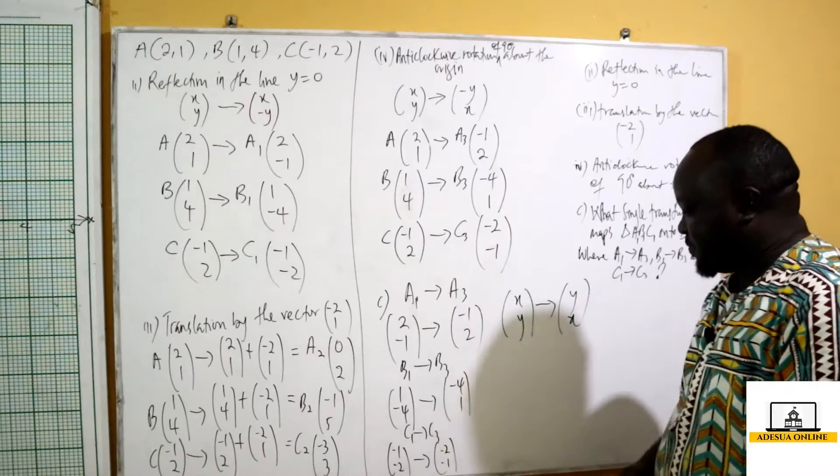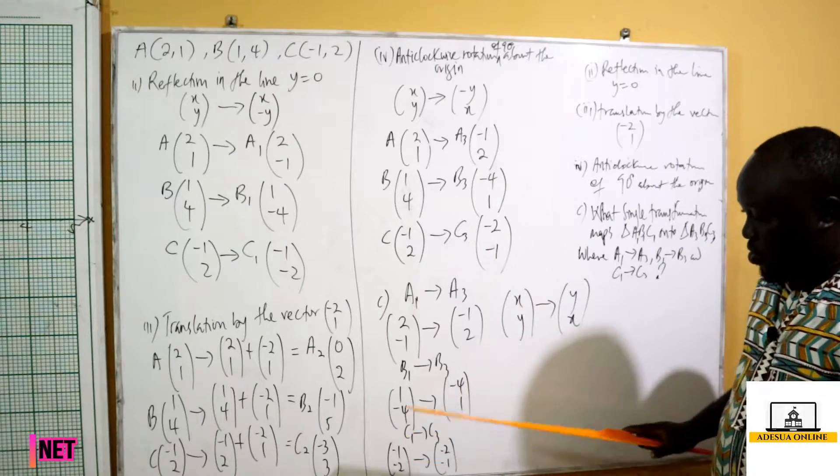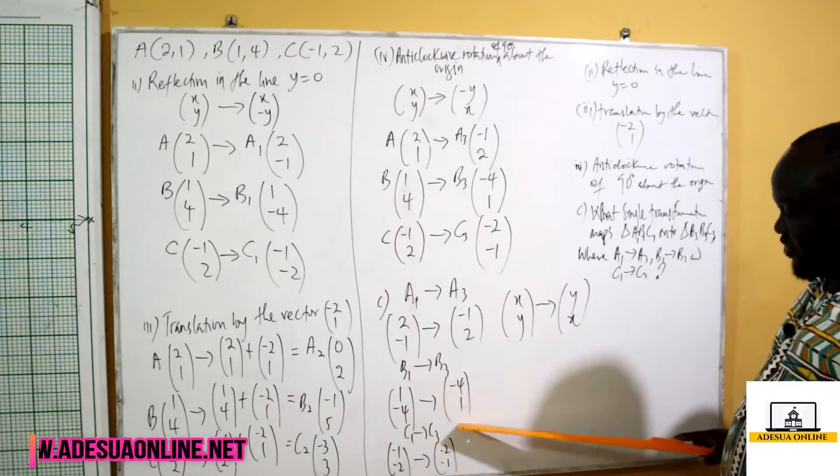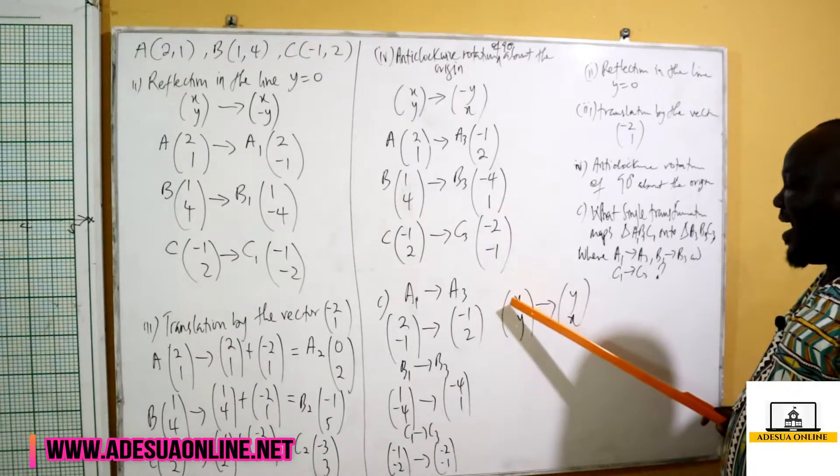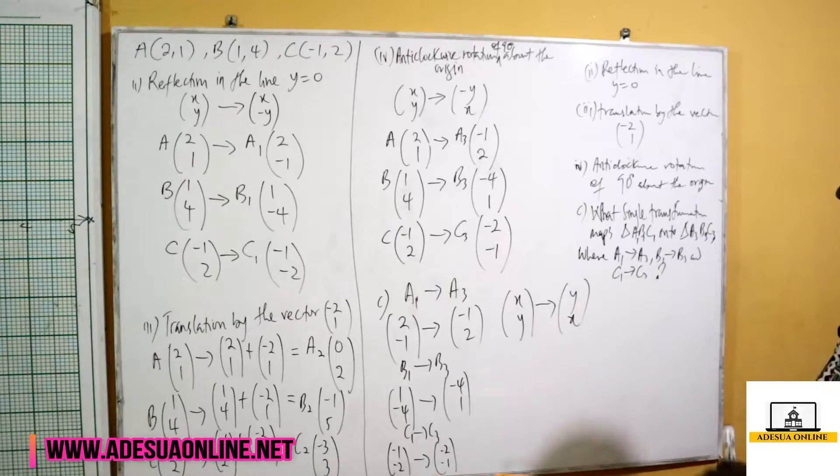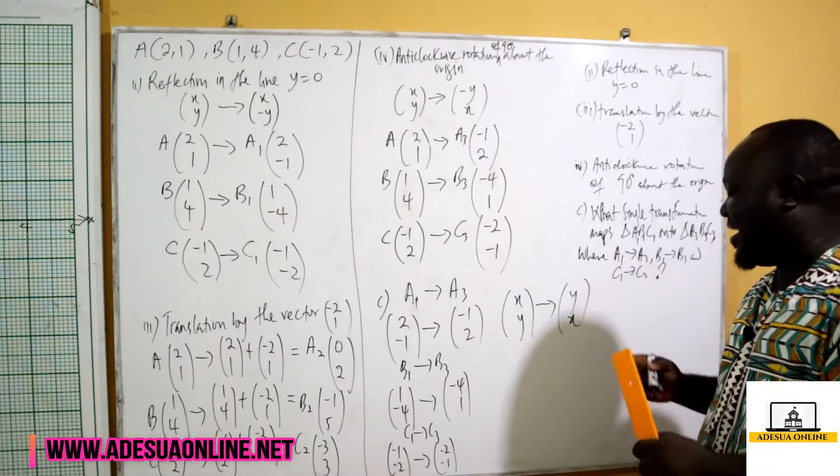So if you watch carefully, (2, -1) became (-1, 2), (1, -4) became (-4, 1), (-1, -2) became (-2, -1). So our (x, y) became (y, x), and this is a reflection in the line y equals x.